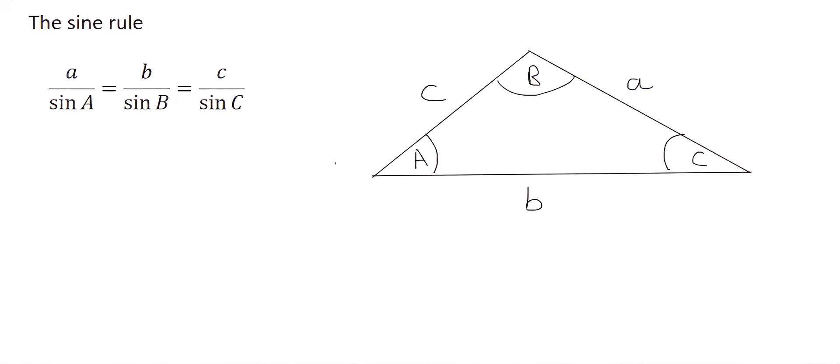So what the rule says is that if you take a, so that's this one, so that would be some length, like 7 for example, and you divide it by the sin of its angle, so that's capital A, then that will be the exact same as taking b over sin B, and that's also the same as taking c over sin C.